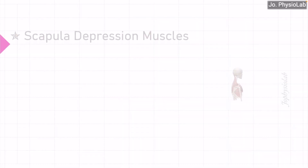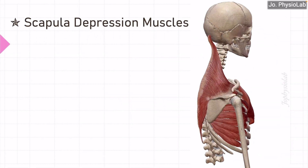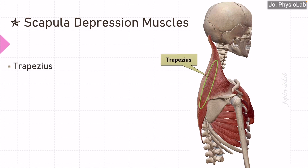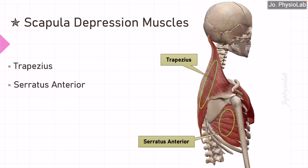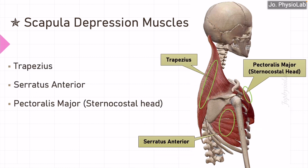There are four main muscles of scapula depression: trapezius, serratus anterior, pectoralis major, and pectoralis minor muscles.